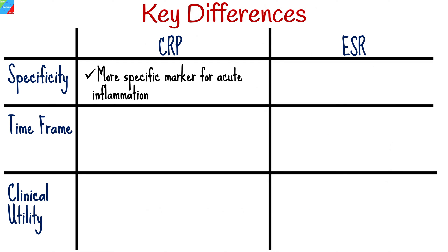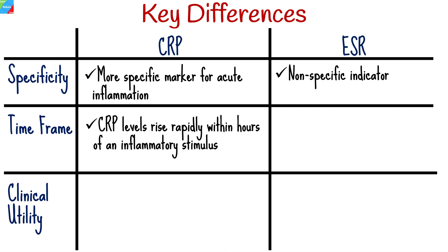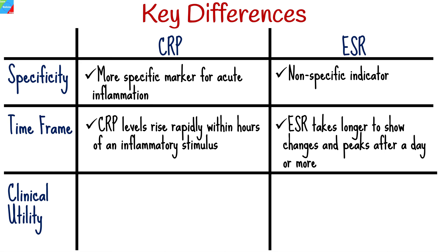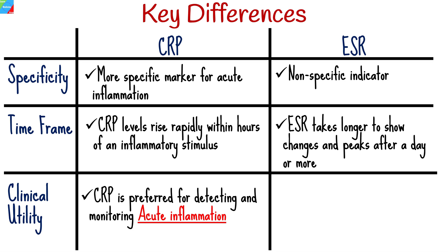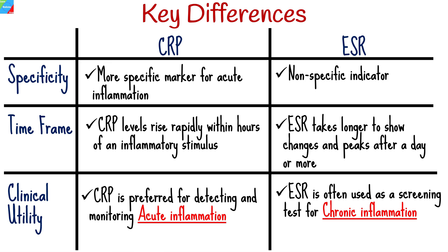CRP is generally considered a more specific marker for acute inflammation, while ESR is a non-specific indicator. CRP levels rise rapidly within hours of an inflammatory stimulus, whereas ESR takes longer to show changes and peaks after a day or more. CRP is preferred for detecting and monitoring acute inflammation, while ESR is often used as a screening test for chronic inflammatory conditions.